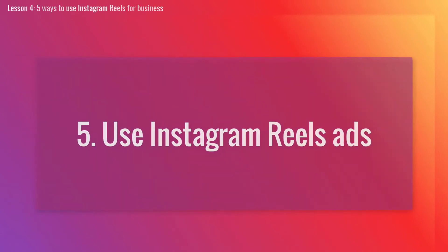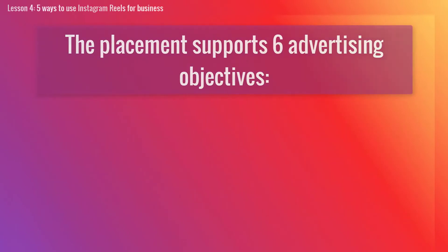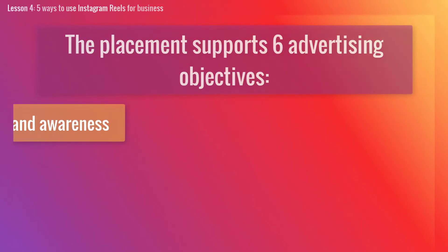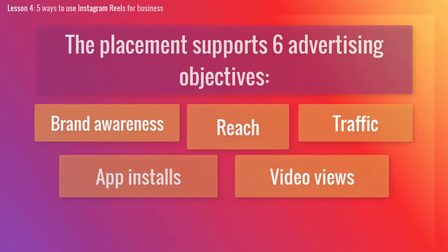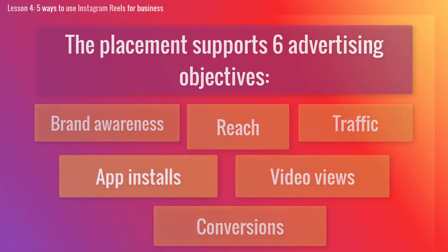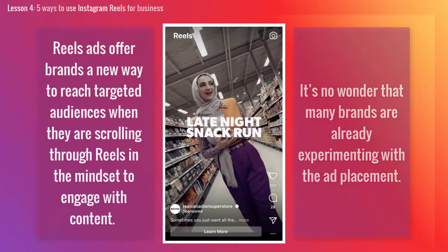And lastly, Number 5: Use Instagram Reels Ads. As of June 2021, Instagram advertisers can choose Reels as a placement for their Instagram ads. The placement supports 6 advertising objectives: brand awareness, reach, traffic, app installs, video views, and conversions. Reels ads offer brands a new way to reach a targeted audience when they are scrolling through Reels in the mindset to engage with content. It's no wonder that many brands are already experimenting with the ad placements. And don't forget to manage your Instagram presence alongside your other social channels.